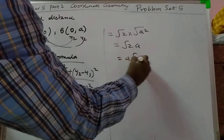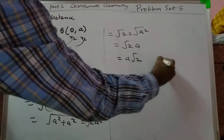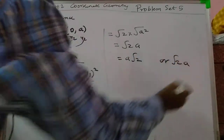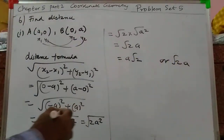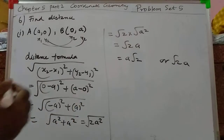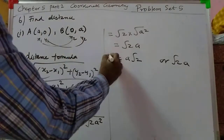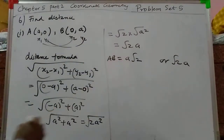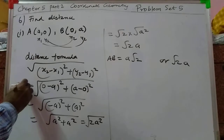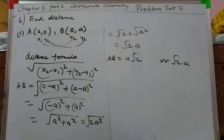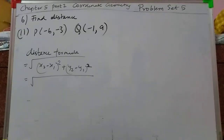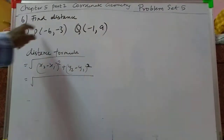That becomes root 2 into root of a square, which is root 2 into a. So the answer is a√2 or √2·a. Okay, next is the second sub-problem.